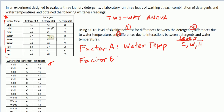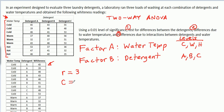Remember, we have a couple of symbols from our notes. R is the number of levels of factor A — so that's three. C, in two-way ANOVA, is the number of levels of factor B — that also happens to be three in this example. N-prime is the number of replications, or in other words, the number of observations for each combination of a particular level of factor A and a particular level of factor B.